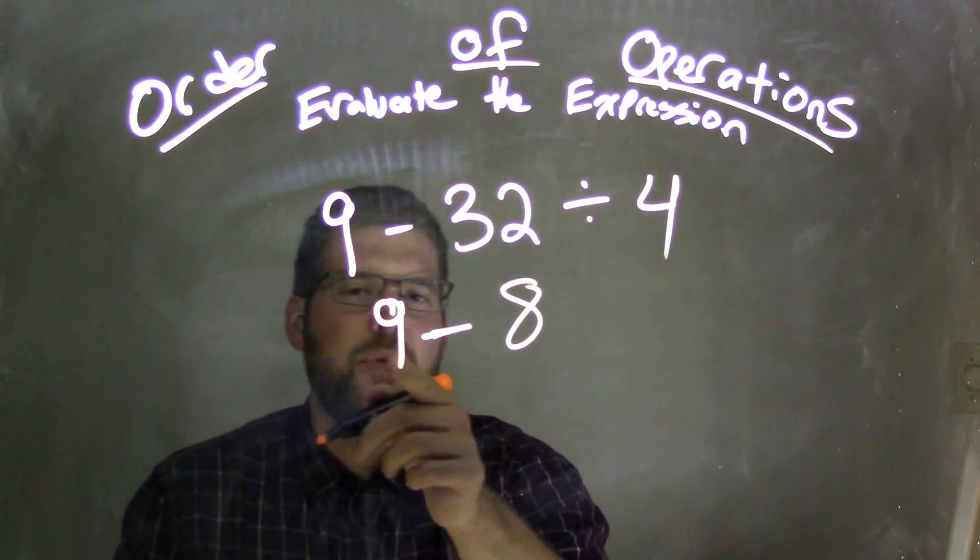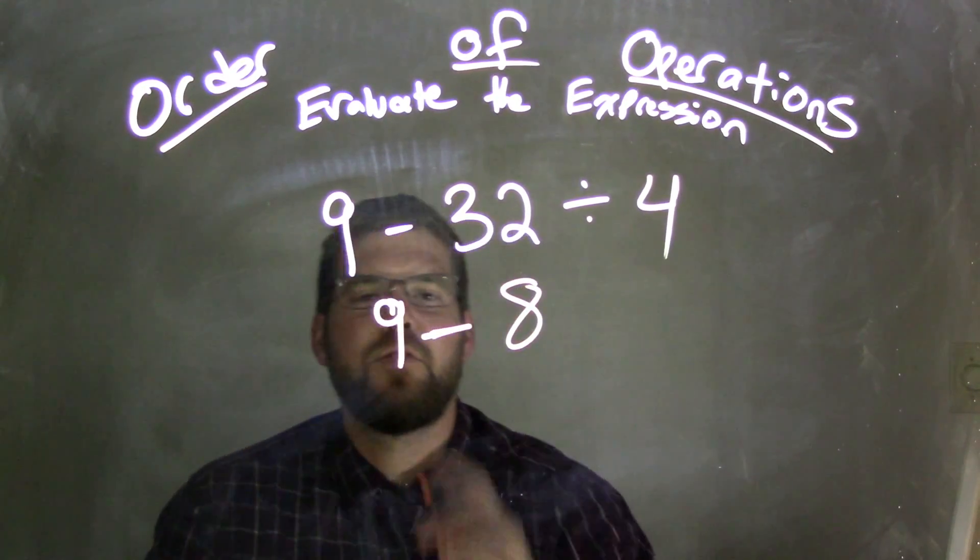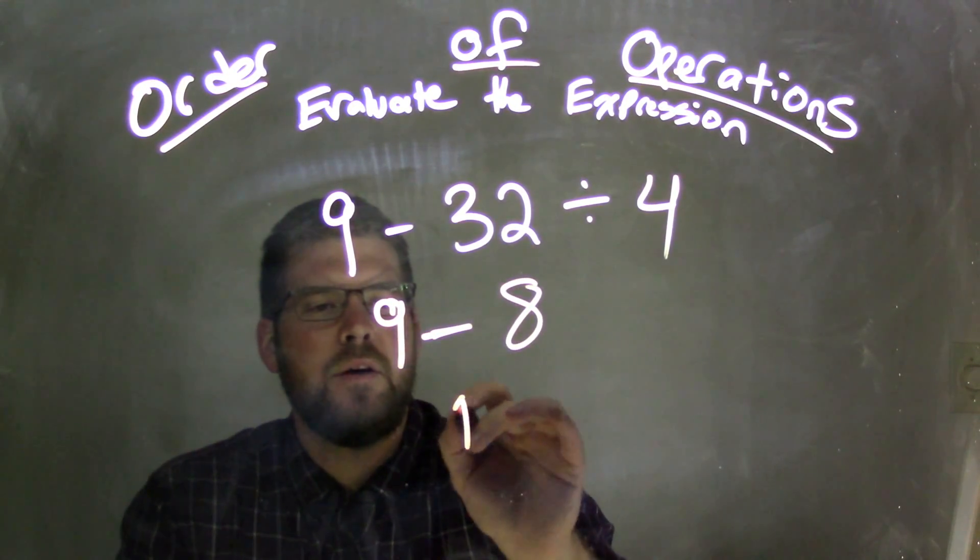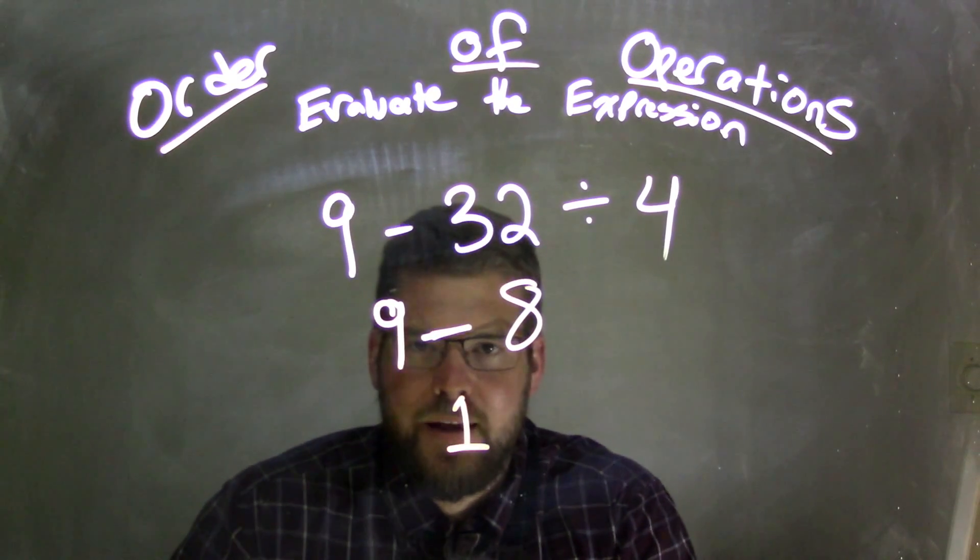So now we have 9 minus 8 left. So 9 minus 8 comes up to be 1. Pretty simple. And there's our answer.